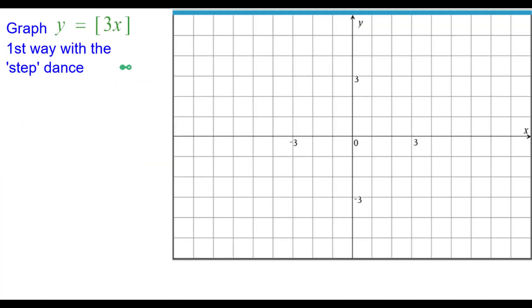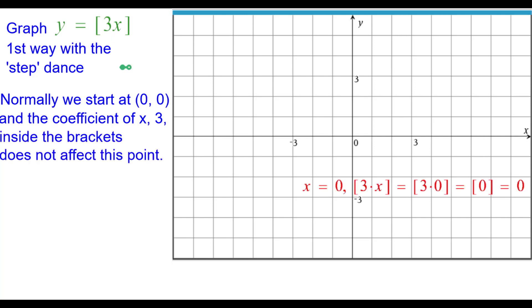The first way is with what we call the step dance. Normally we start at the origin and the coefficient of x, 3, inside the brackets does not affect this point. So when x equals 0, the greatest integer of 3 times 0 is still 0.